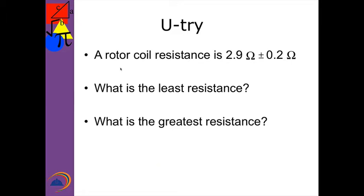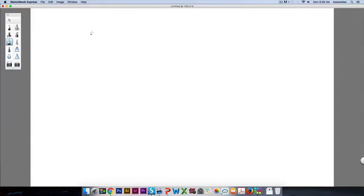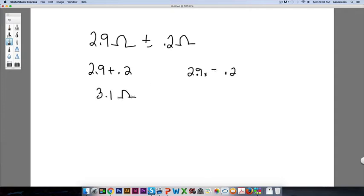Welcome back. Let's go to our slates. So we have 2.9 ohms plus or minus 0.2 ohms. We'll do 2.9 plus 0.2. We'll do 2.9 minus 0.2. So I get 3.1, that's the greatest. And 2.9 minus 0.2 is 2.7 ohms, and that's the least.